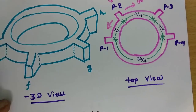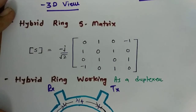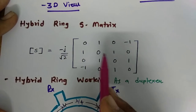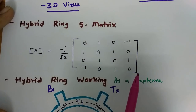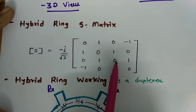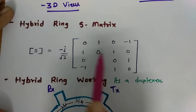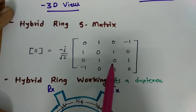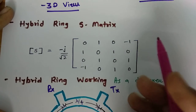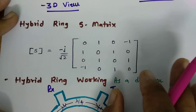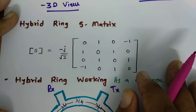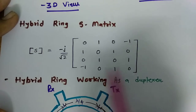I won't go into the derivation of the hybrid ring matrix, but the S-matrix of the hybrid ring shows that all ports are perfectly matched. One can see that the return loss is zero — S11, S22, S33, and S44 are all zero. Port 1 and port 3 are isolated from each other, and port 2 and port 3 — when we send a signal from one to three, the other ports get isolated.